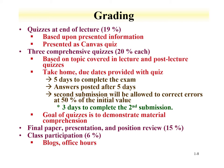The course grading is as follows: at the end of each lecture, there's a quiz worth 19% of the total grade, posted on the Canvas site and based on the presented information. There are three comprehensive quizzes, each worth 20% — these will be take-home with five days to complete. Answers will be posted after five days, and a second submission is allowed, but changes only receive 50% of the grade, due three days after the second submission. The goal of the quizzes is to demonstrate material comprehension. The final paper, presentation, and position review is worth 15%. Class participation is 6% of the total grade and includes blogs and office hours.